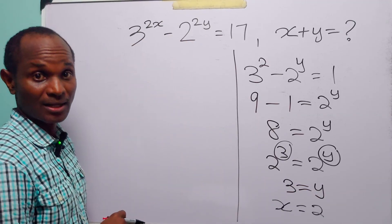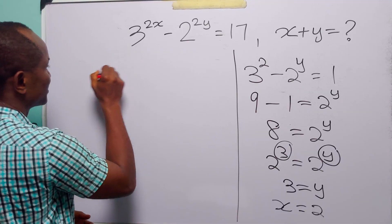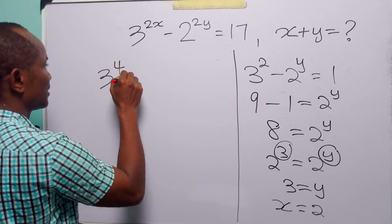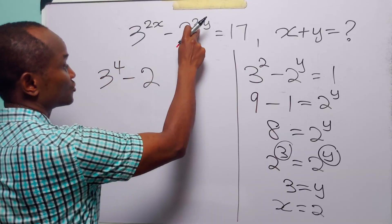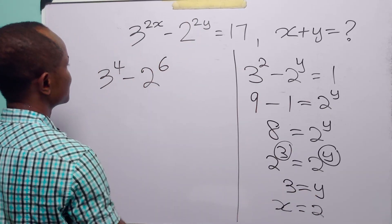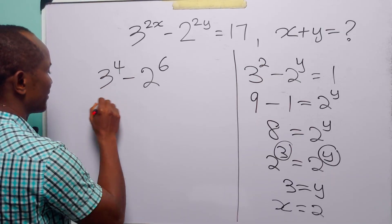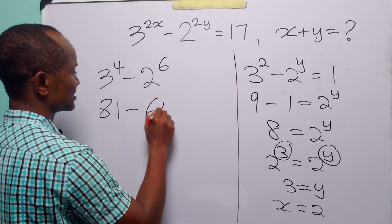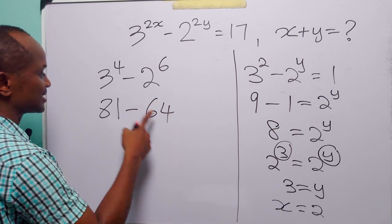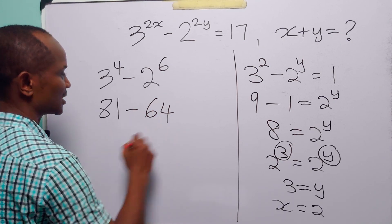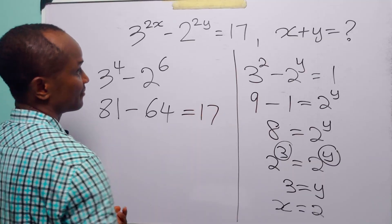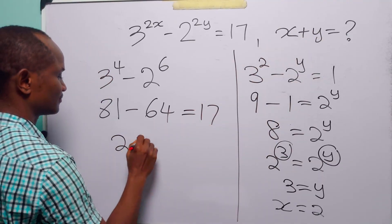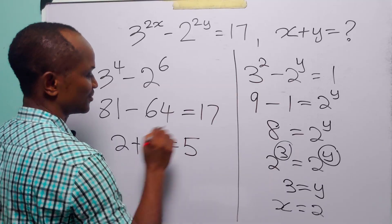Before the final calculation, let us check our result. We have 3 to the power (2 times 2), that is 3 to the 4th power, which is 81, minus 2 to the power (2 times 3), that is 2 to the 6th power, which is 64. And 81 minus 64 equals 17. So the value of x plus y equals 2 plus 3, which is 5.